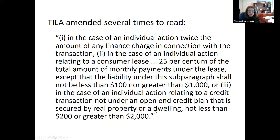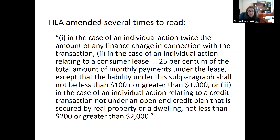Ultimately, when you read the statute, it said that in an individual action — which is what Coombs was — you would get twice the finance charge. So they asked for twice the finance charge. But then it said in a consumer lease you would get something more complicated because leasing is more complicated, but not less than $100 or greater than $1,000, which is what the dealership was relying on. And then for open-end credit, you were going to get up to $2,000 when it's secured by a dwelling.